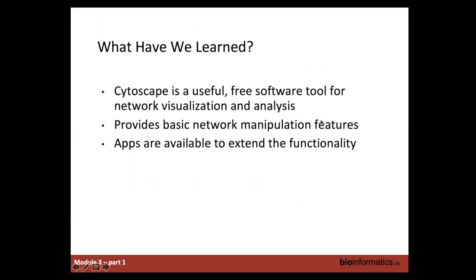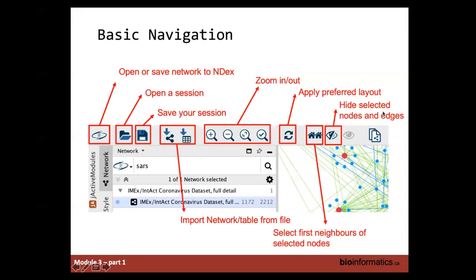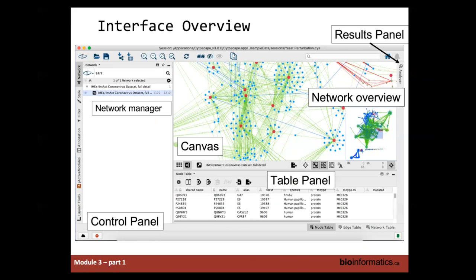Now is the time we're actually going to try out Cytoscape. I'd like you to open up Cytoscape and try the same things as I go through them live. When you open Cytoscape, on the left-hand side of the screen you have the control panel, which has many different tabs. By default you should always see network, style, filter, and annotate tabs. The network manager tab will always list all the networks that you have.